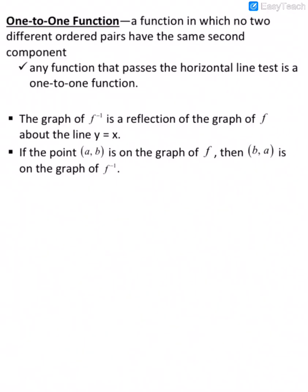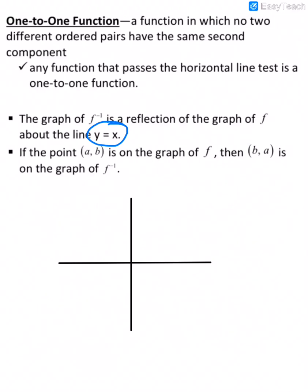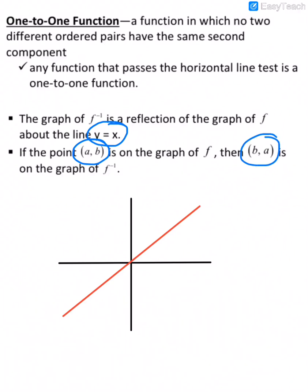When looking at the graphs of inverses of functions, the inverse of a function is reflected about the line y equals x on the graph. So on the Cartesian coordinate system, if we have a function, its inverse reflects across that line y equals x. Also, when two functions are inverses of each other, if we have a point (a, b) on the graph, then the point (b, a) will be on the graph of its inverse. Flipping the x and y of every point gives the inverse graph.